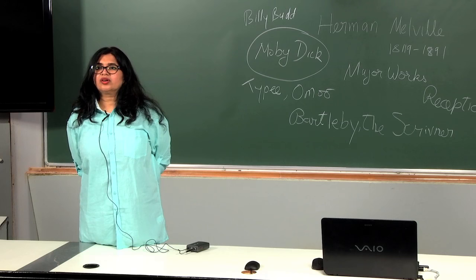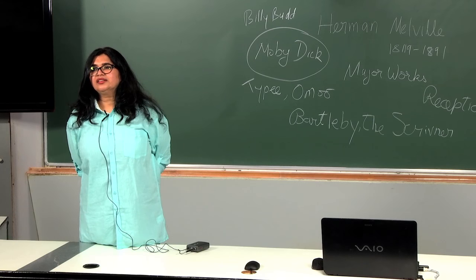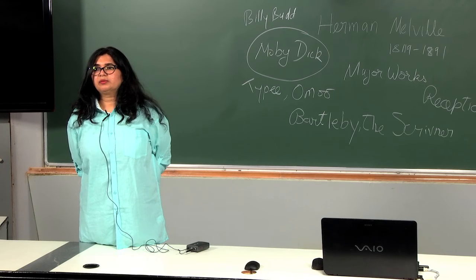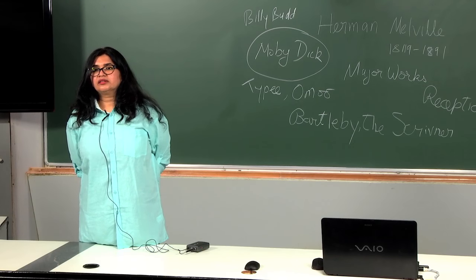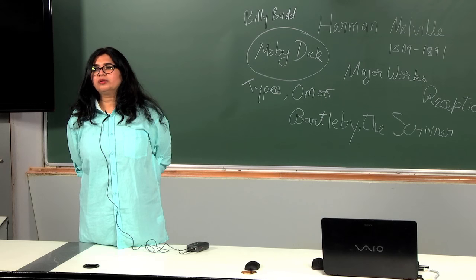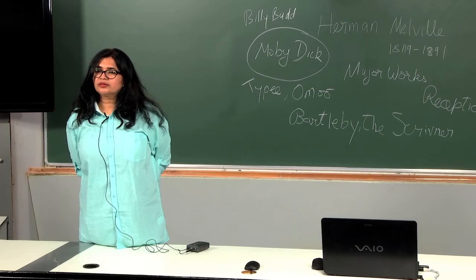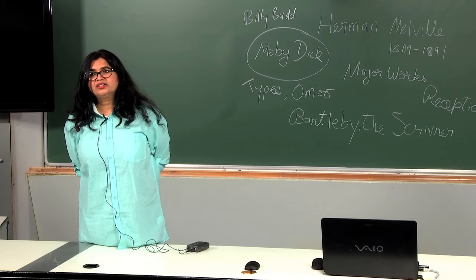He wrote a philosophical work called Clarel in 1876. At his death he left the unpublished manuscript of his novella Billy Budd, which was published in 1924. His other important works are some books of poems, John Marr and Other Sailors, and also Timoleon. Timoleon was published in 1891, John Marr was published in 1888.